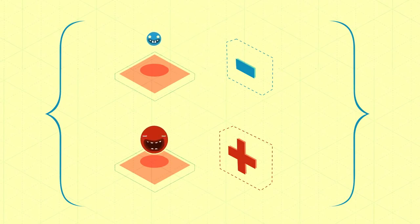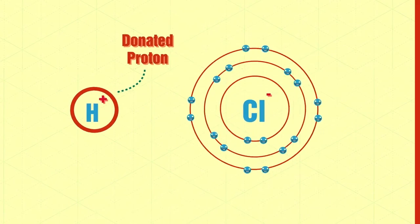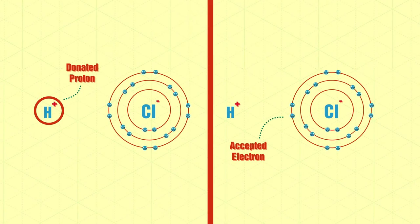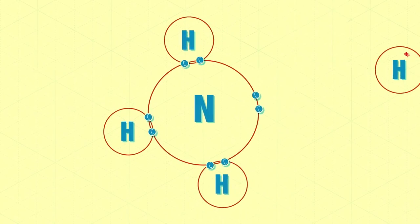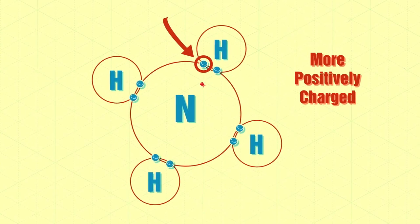Remember that protons are positively charged and electrons are negatively charged. So if a molecule is willing to give up a proton, that's not too different from it being willing to accept an electron. Either way, it's becoming more negatively charged. Other molecules are willing to accept a proton or give up an electron. These are becoming more positively charged.